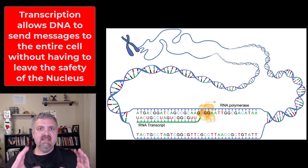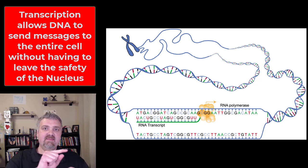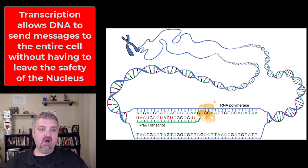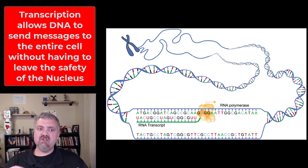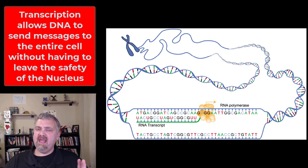Why does transcription exist? DNA is housed and protected in the nucleus. We need this intermediate — the RNA — to get the message from the nucleus to the ribosomes, at least in cells like ours. Another thing to note: when I say RNA, what I'm actually saying is mRNA, or messenger RNA. I'll talk in the next video about translation about the other types of RNA, but if someone's just saying RNA, they are talking about messenger RNA.